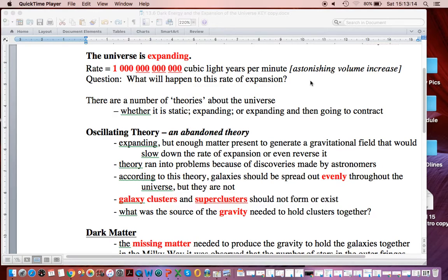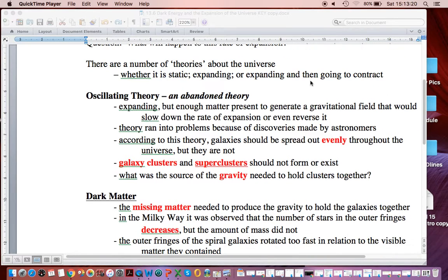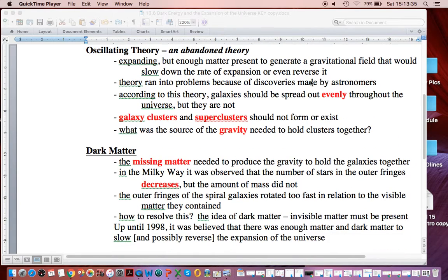The question is, what's the source of gravity needed to hold clusters together? It was known there wasn't enough mass to do that, or visible matter to do that. So the explanation for this missing matter was something called dark matter. Matter that we can't see, and really have not been able to detect well. But matter that was needed to produce the gravity to hold the galaxies together.